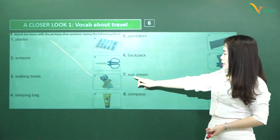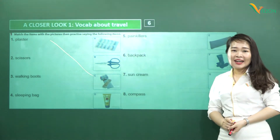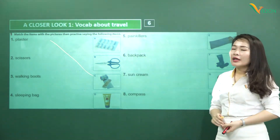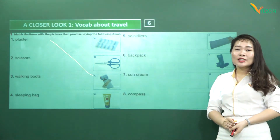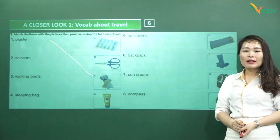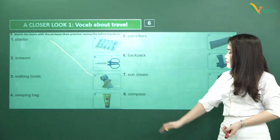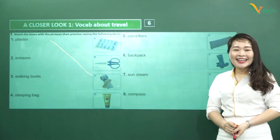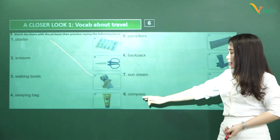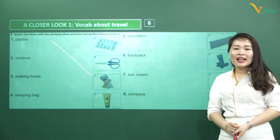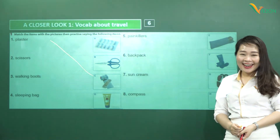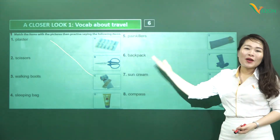Next, 'sun cream' — 'sun' means the sun, 'cream' means cream; cream to protect against the sun is sunscreen. Note the pronunciation: 'sun cream', not 'sun cream' with a different stress. Next, 'compass' — note the 's' at the end, so don't say 'compass' without it; say 'compass' correctly. That finishes the travel items section.